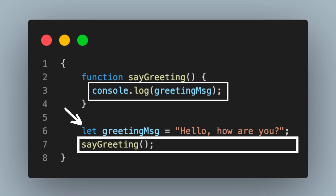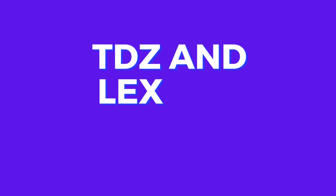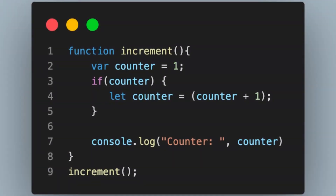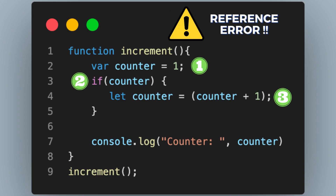Now that we have understood the meaning of temporal dead zone, it is time to look at some interesting cases that emerge because of TDZ and lexical scoping. As you may already know, JavaScript follows lexical scoping, meaning a variable may only be referenced within the block of code where it is declared. This leads to some special situations when we use var and let together. Look at this first example: we have a function called increment. It has a counter variable declared using var. If the value of counter is truthy, we declare another variable counter using the let keyword and assign it a value using counter plus 1. We get a reference error: cannot access counter before initialization — the same error we get when a variable is in a temporal dead zone.